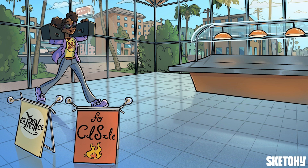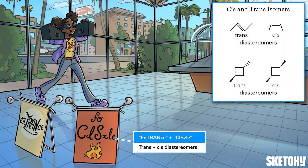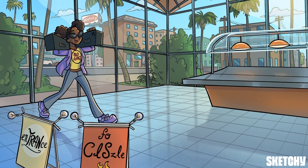Any two stereoisomers that are not mirror images are diastereomers. One common way for molecules to be diastereomers is symbolized by signs at the sizzling grill entrance: trans and cis isomers of otherwise identical molecules are diastereomers of each other. The light bulbs on different sides above the trans sign remind you that trans molecules have their highest priority groups on opposite sides of a plane, while cis molecules have their highest priority groups on the same side.